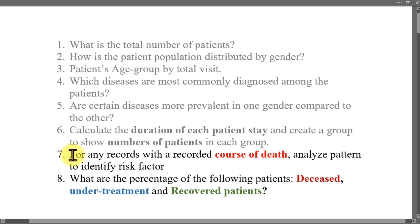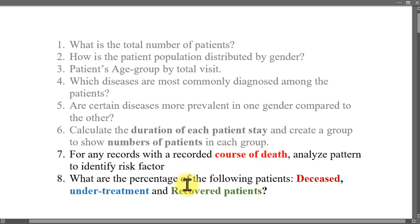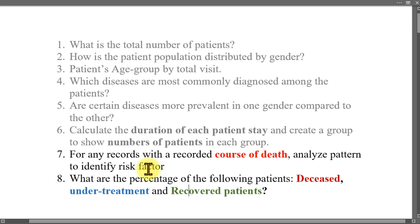We're going to be working on number seven today in this Python for data analysis class. It says: for any records with a recorded cause of death, analyze patterns to identify risk factors. This question looks somewhat complex, but I'm going to show you how to actually solve this particular problem using Python. Go ahead and fire up your Python.